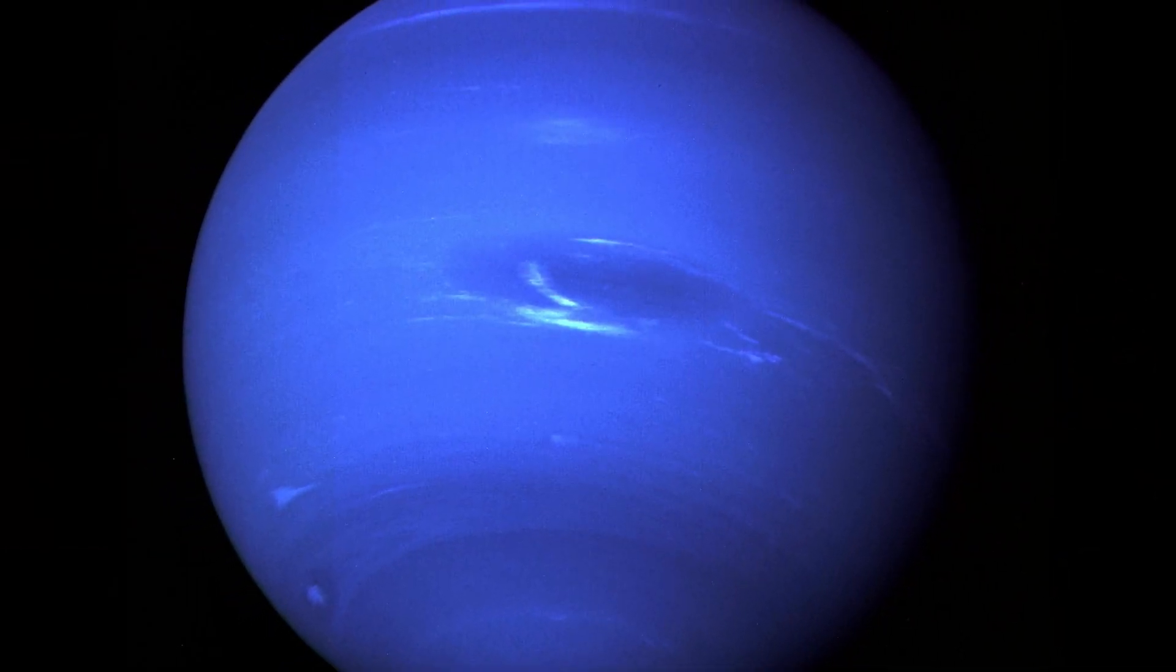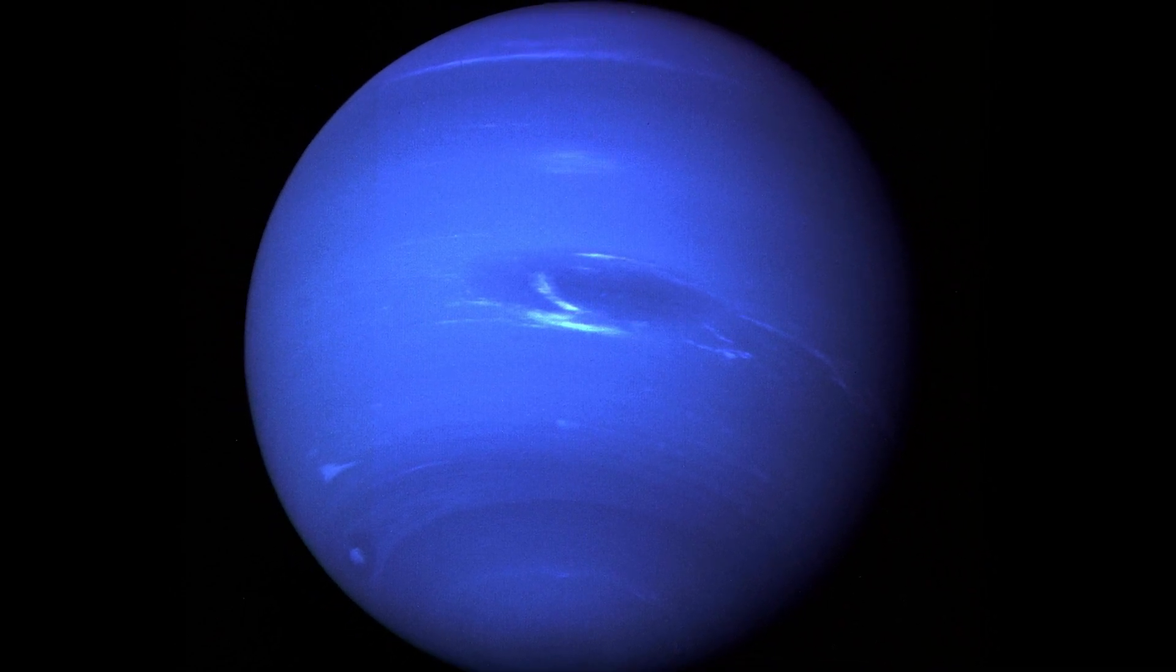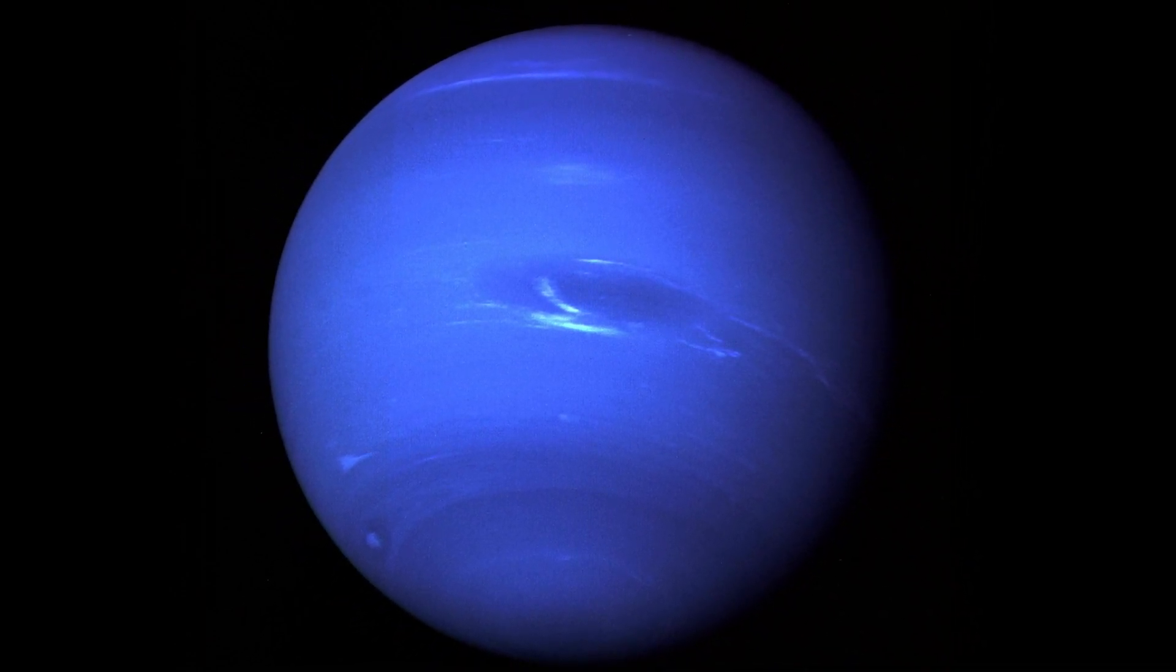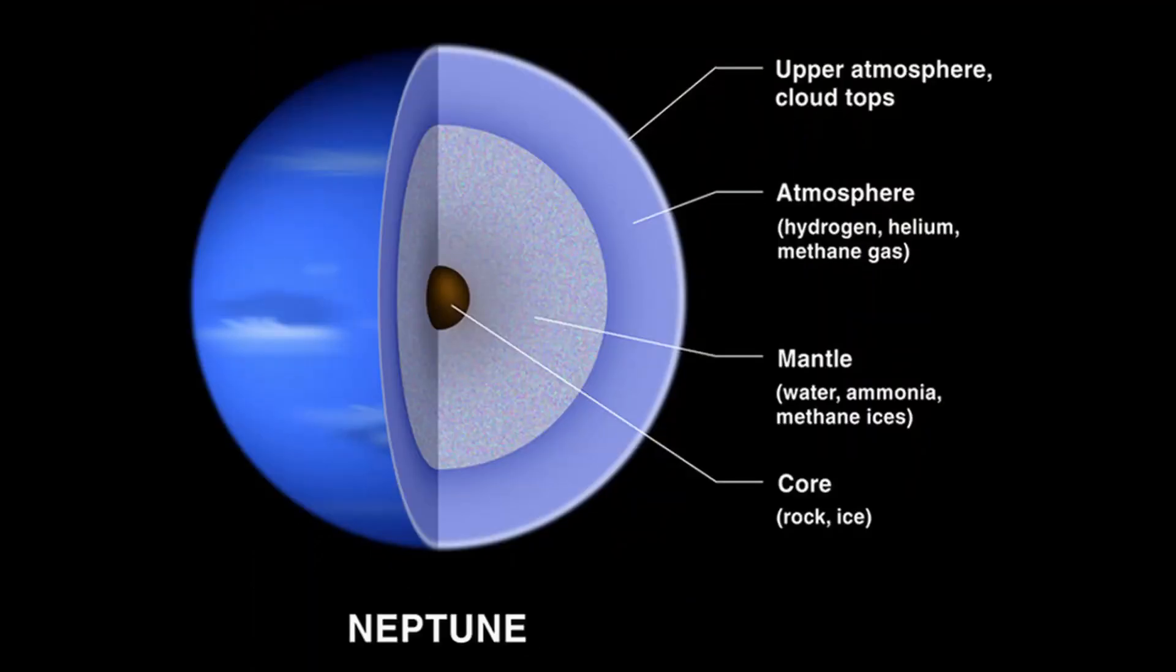Neptune spins very quickly on its axis. The planet's equatorial clouds take 18 hours to complete one rotation. The reason this happens is that Neptune does not have a solid body.